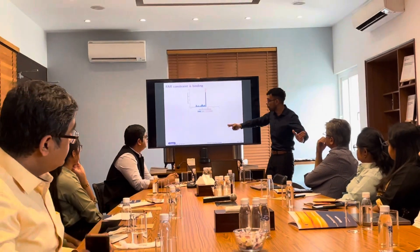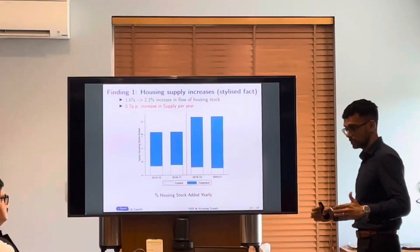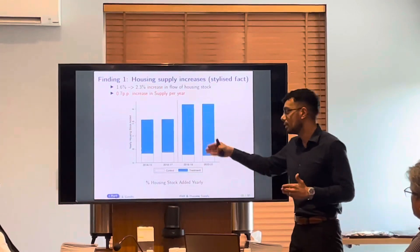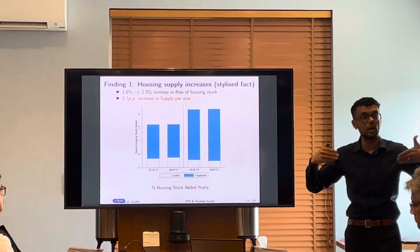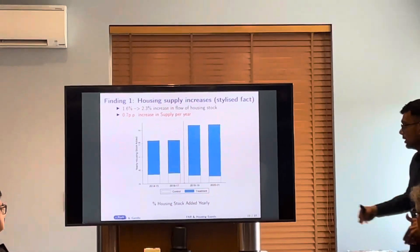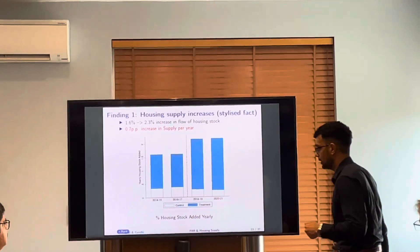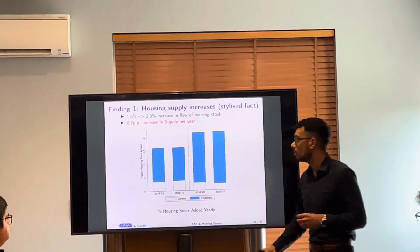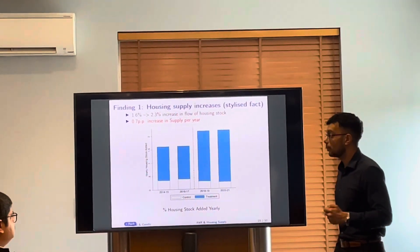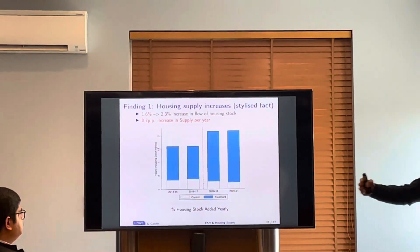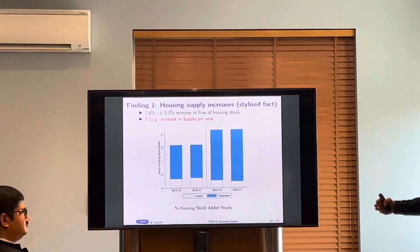So most building applications — there is a distribution where the denominator and the numerator here represent the new housing stock. What is built in 2014-15, what is built in 2016-17. We find that pre-reform, every year 1.5% of the total housing stock is added in Mumbai.